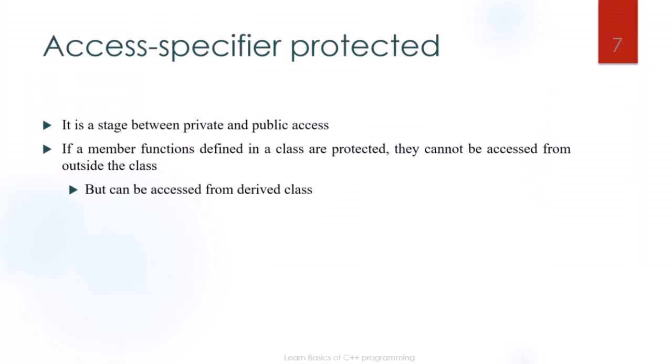The last access specifier is protected. The protected access specifier is between private and public. If a member function is declared as protected in a class, it cannot be accessed from outside the class. However, it can be accessed from the derived class. The members of the base class can be used within the derived class as protected members, except for private members.